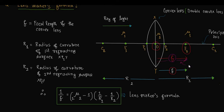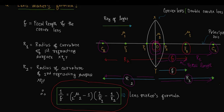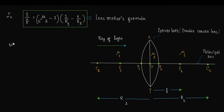In the diagram, f is the focal length. R1 is the radius of curvature, which is the distance of C1 from the optical center O. R2 is the radius of curvature of the second refracting surface, which is the distance of C2 from the optical center O. So we get 1/f = (1mu2 − 1)(1/R1 − 1/R2), which is the Lensmakers Formula.